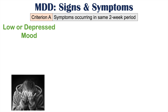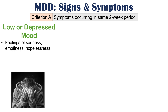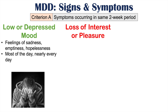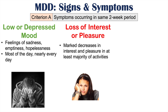The first symptom is a low or depressed mood. Patients will often have feelings of sadness, emptiness, and hopelessness, and it occurs most of the day, nearly every day in that 14-day period. Another related symptom is loss of interest or pleasure — marked decreases in interest and pleasure in at least a majority of activities. What a patient might have liked or enjoyed before, they don't have the interest in those activities anymore and don't gain any pleasure from them.